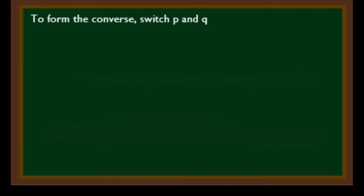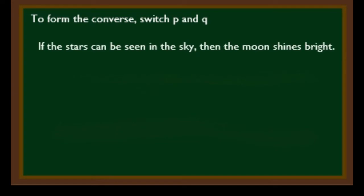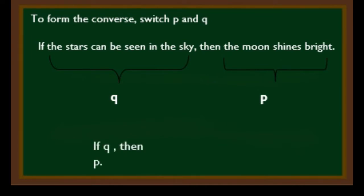Now let's try to create a converse statement. To form the converse, we need to switch P and Q — interchange or swap the hypothesis and conclusion of the original statement. So: if the stars can be seen in the sky, then the moon shines bright. The first statement is now Q and the second statement is P. The converse statement is written in the form if Q, then P, or Q implies P.